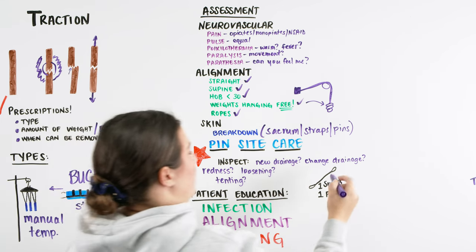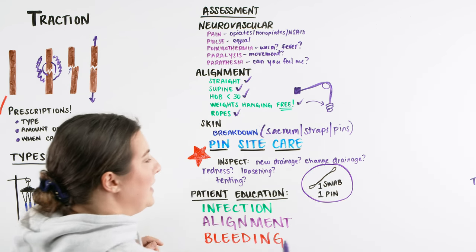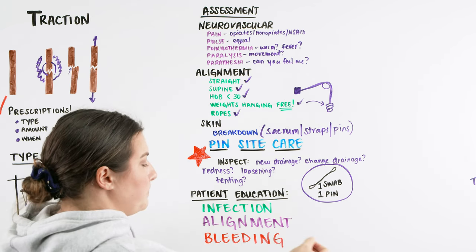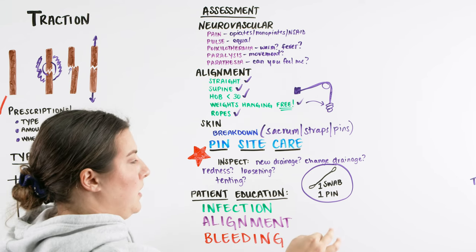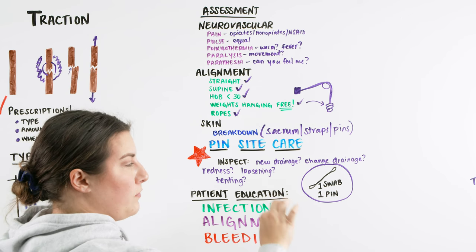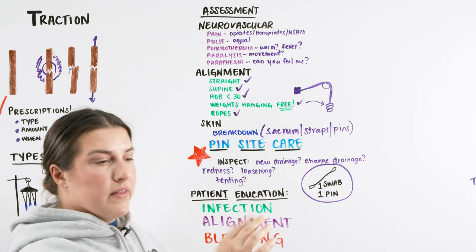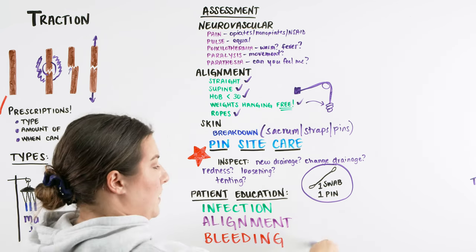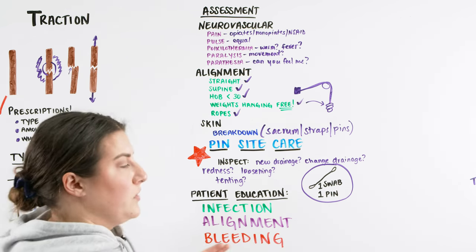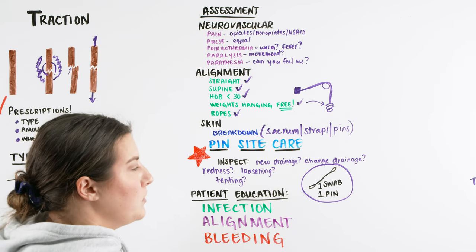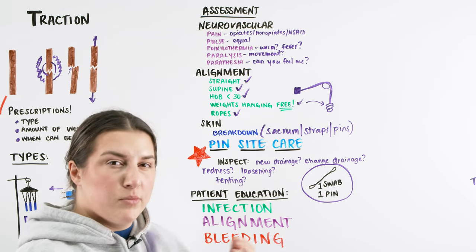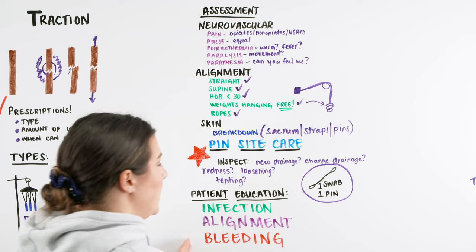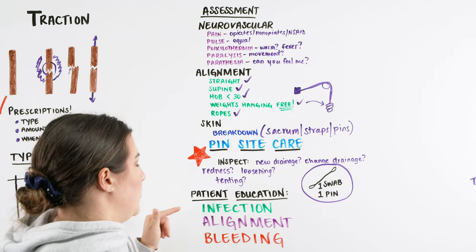When cleaning pin sites, use one swab per pin. Take a swab — typically soaked in chlorhexidine or whatever your facility uses — clean around the pin, then discard that swab and get a new one for the next pin. This prevents cross-contamination: if the first pin has infection and you use the same swab down the line, you're spreading infection to each pin. Bring the correct number of swabs to the bedside based on how many pins the patient has.